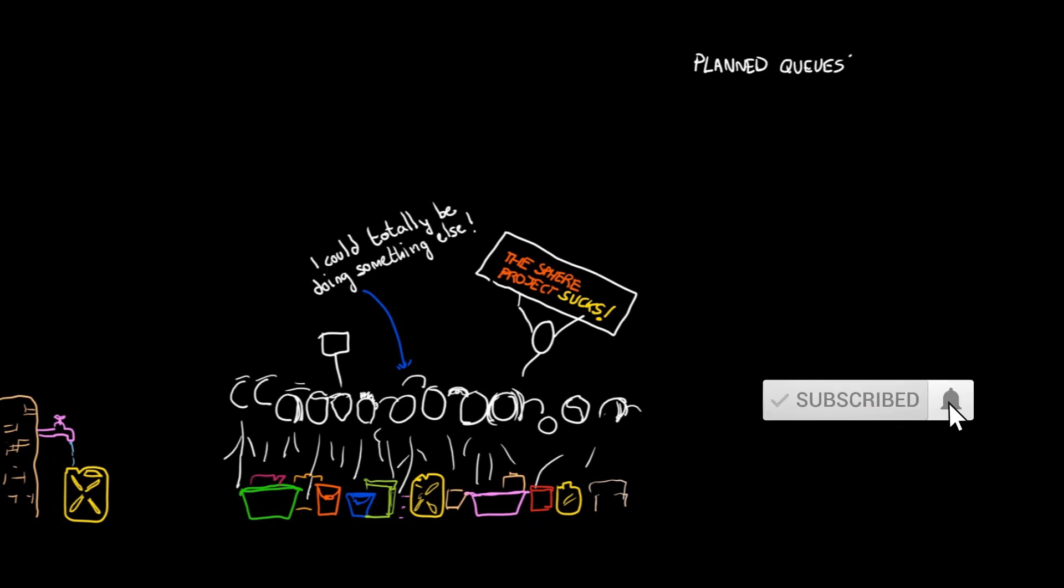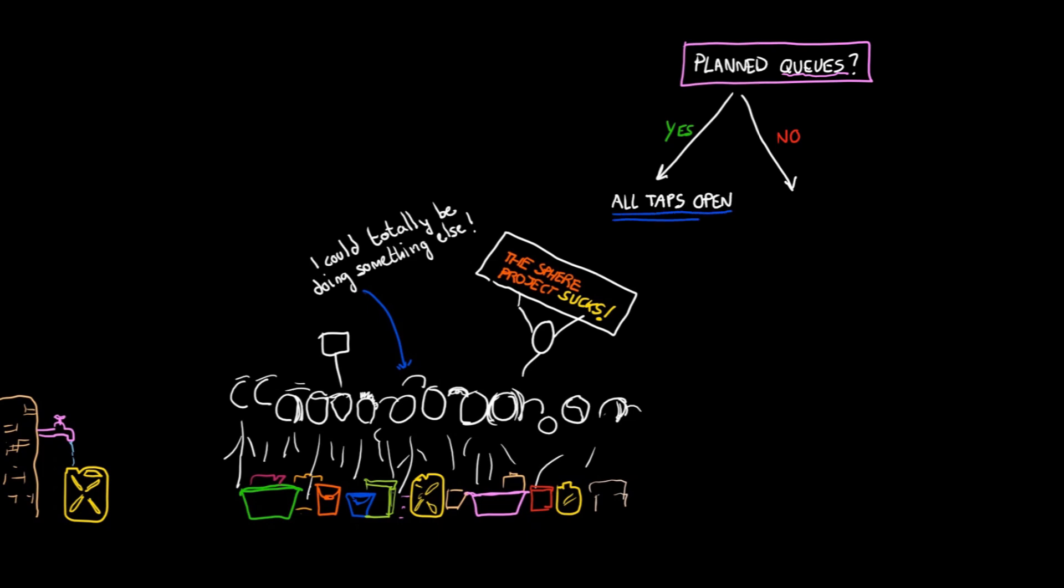First question: will there be queues? That may be the case of refugee camps and emergencies. If yes, use an all-taps open approach. Count the number of taps and multiply by a flow figure. I like 0.2 liters per second.